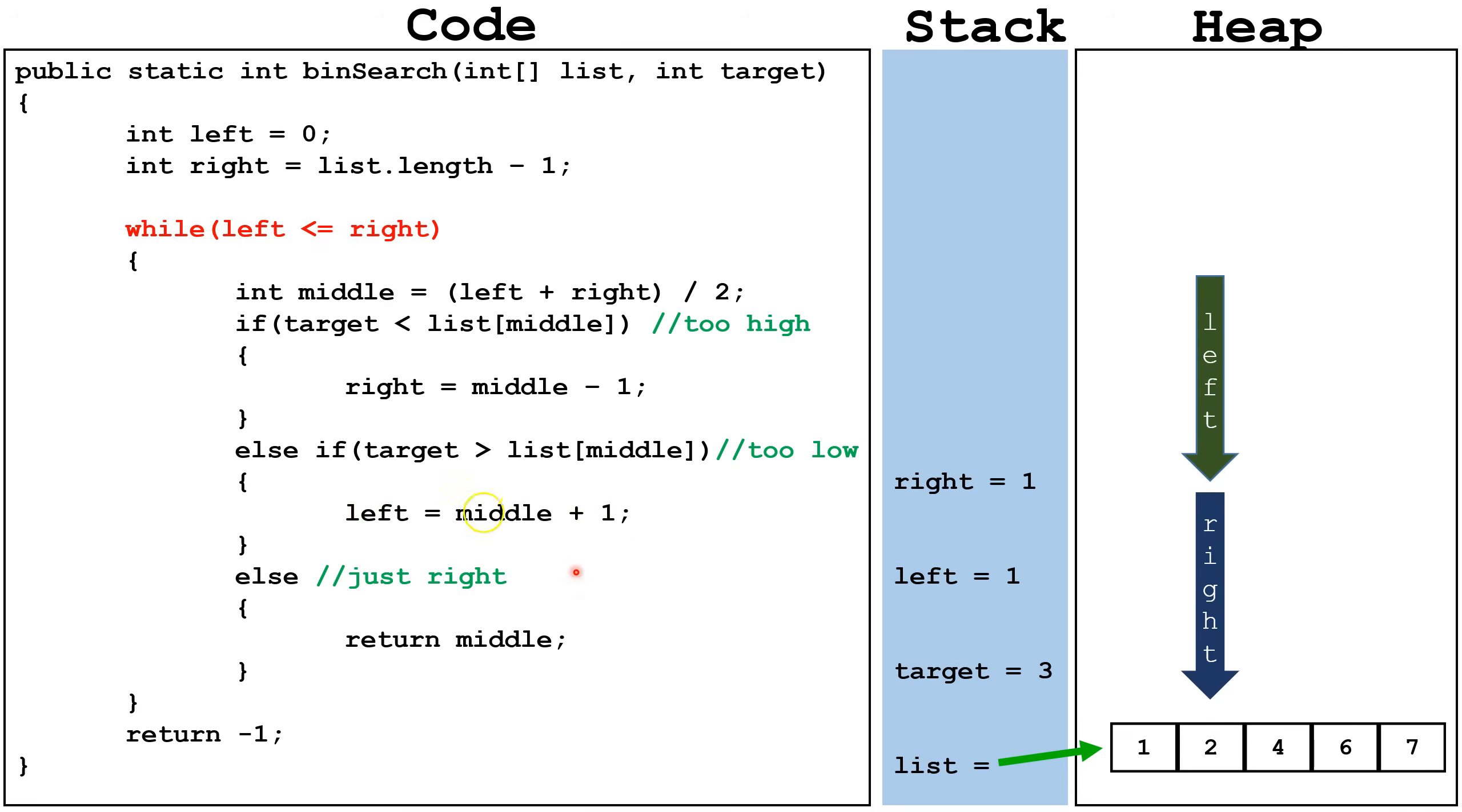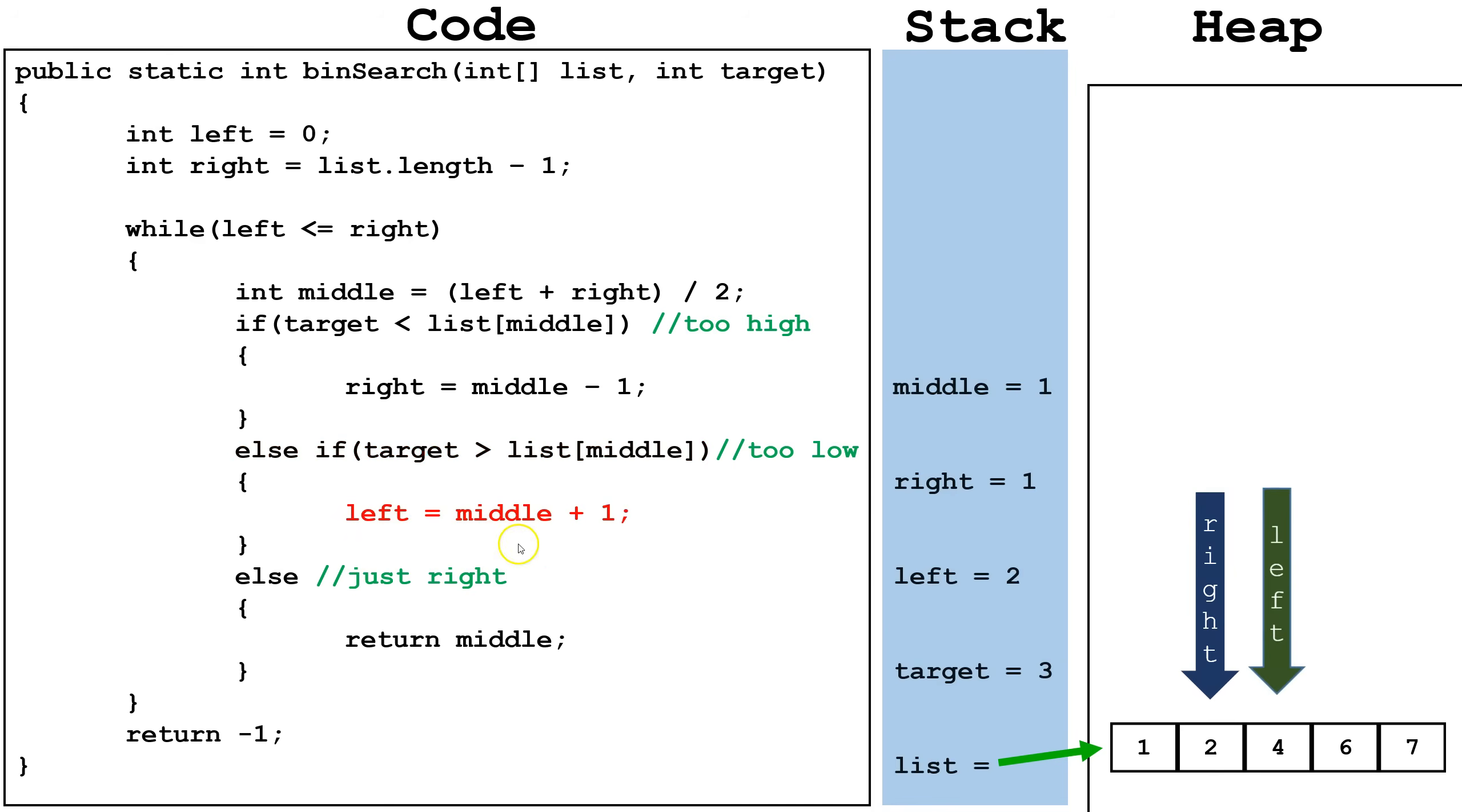So now we go back up to the top. Left is still less than or equal to right. We set middle equal to 1 plus 1 divided by 2, so middle is 1. We're checking if target 3 is less than list index middle. 3 is not less than 2, so now we check is target 3 greater than 2, it is, so we set left equal to middle plus 1.